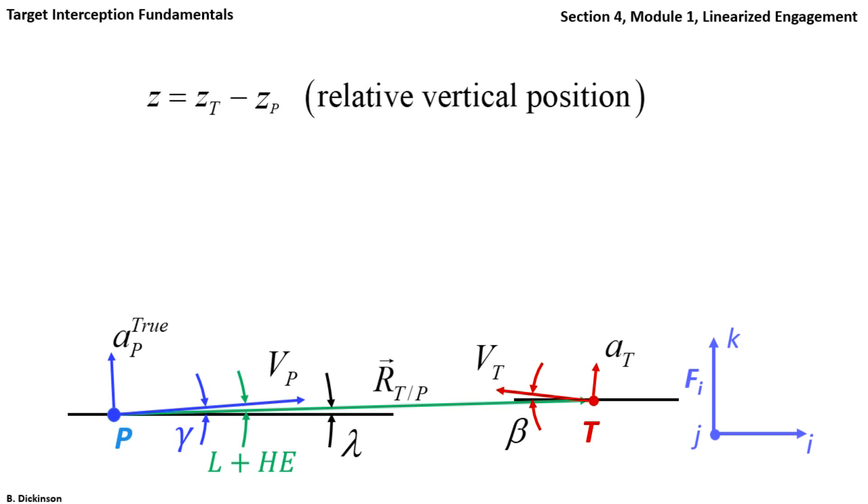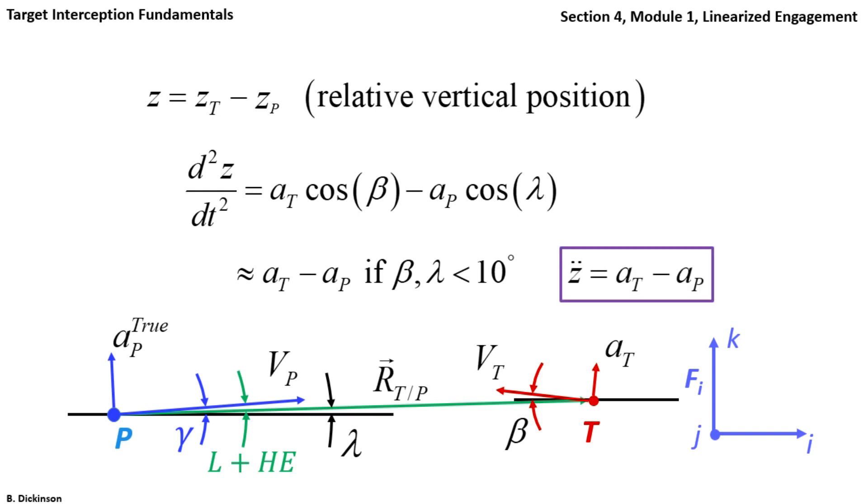Let's define the vertical relative position between the target and pursuer as the variable z. Two time derivatives gives the relative acceleration in the vertical direction between target and pursuer, where the cosines are making vertical projections of target and pursuer acceleration. But, we assume that beta and lambda are small, so we can approximate z double dot as simply at minus ap.